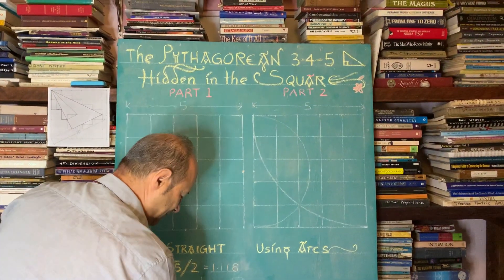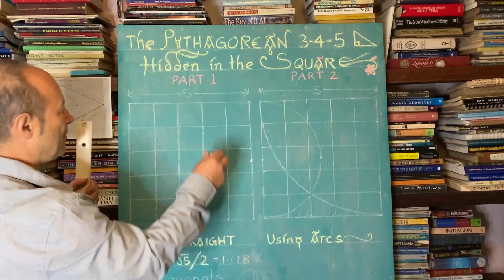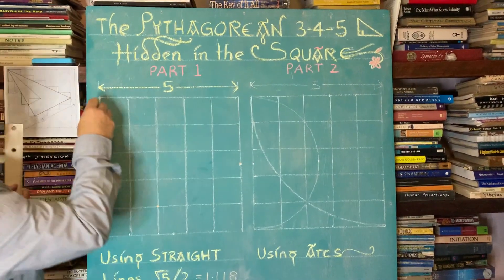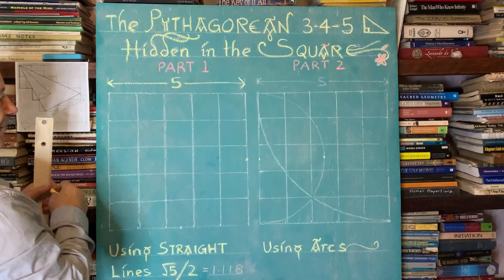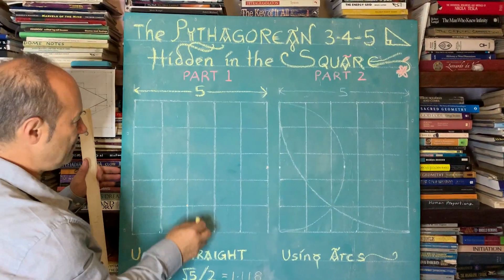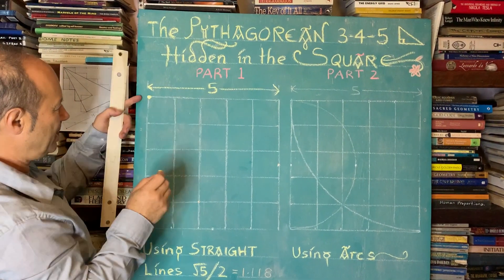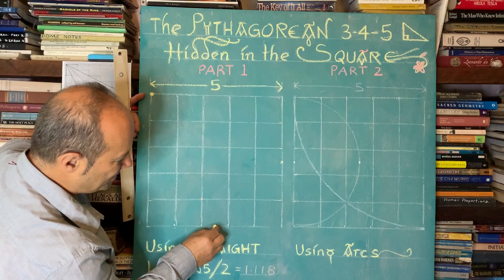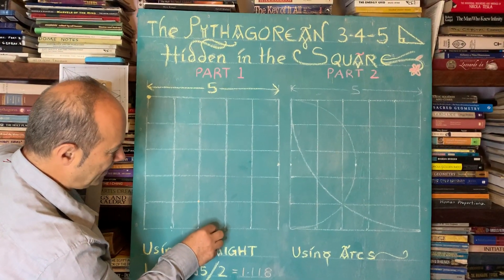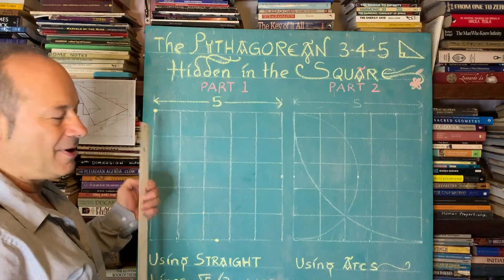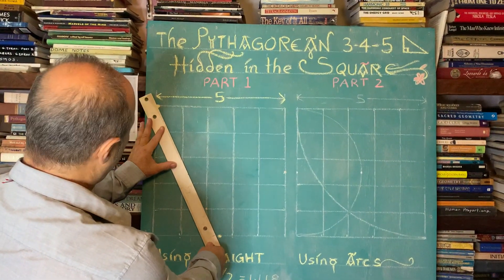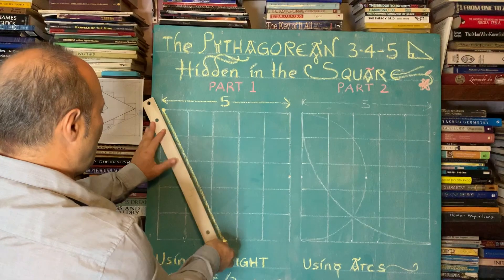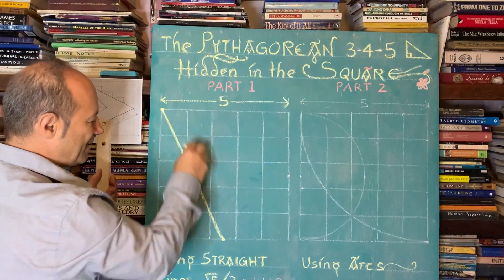I'm going to need a ruler and I'll start off with a five-by-five grid. Part one: we have a distance of five units, and this side is also five. What's important is that we're going to emanate from this corner point, and we also need the midpoint — half of five is 2.5. So I place my ruler and draw a nice strong diagonal line. That's the first diagonal.